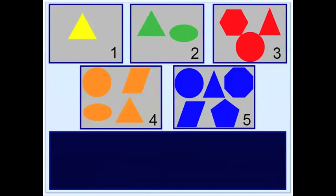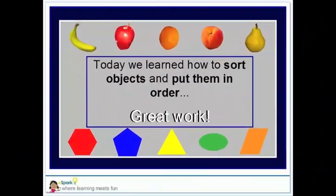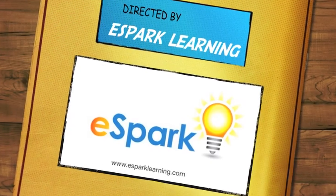Great job with the sorting. Now we have one, two, three, four, and five different shapes in each box. Today we learned how to sort objects and put them in order. Great work! Thank you.